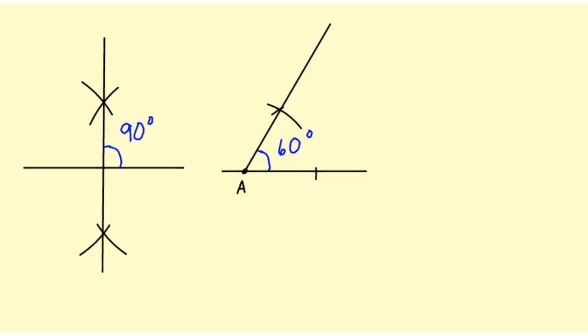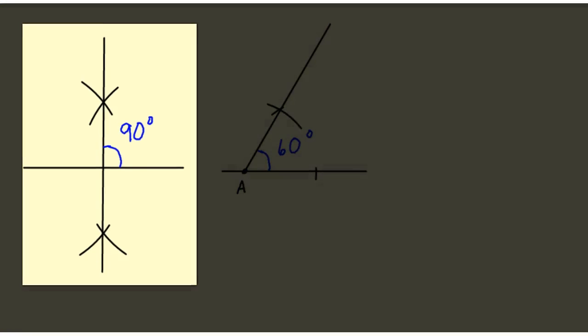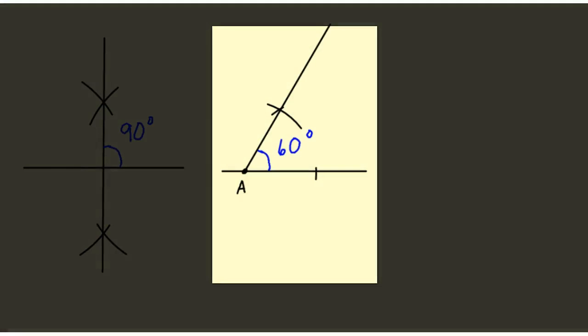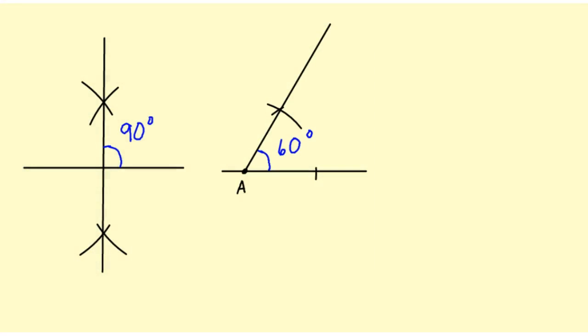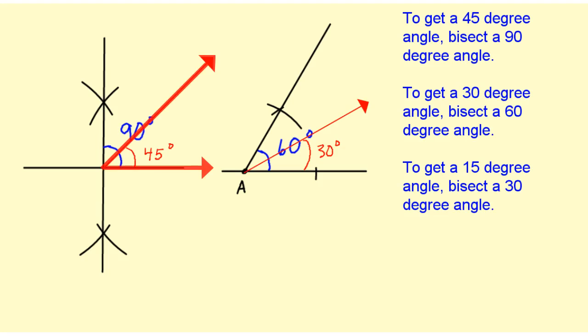In this video, we are going to construct a 165-degree angle. As a quick review, we already know how to construct 90-degree and 60-degree angles. Because of our ability to bisect angles, we can also get 45-degree and 30-degree angles.